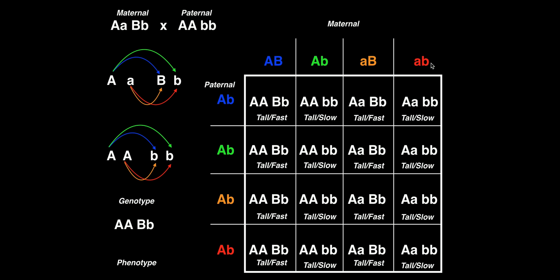For the last column, we combine the egg genotype little a little b with sperm big A little b. Combine the A's: big A little a. Combine the B's: little b little b. All cells in this column will be the same. The offspring is heterozygous for height — which is phenotypically tall — but homozygous recessive for the speed gene, which gives the phenotype of slow.